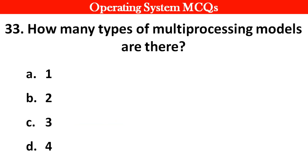Next question: How many types of multiprocessing models are there? Options: A. 1. B. 2. C. 3. D. 4. Right answer is option B: 2.